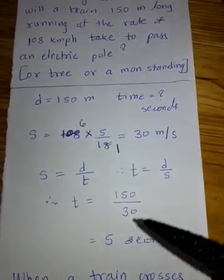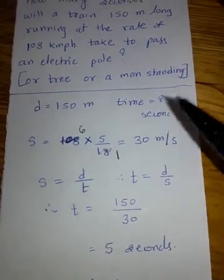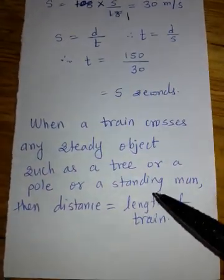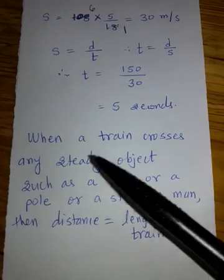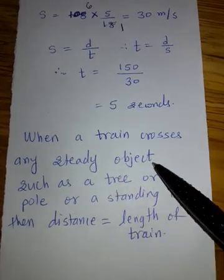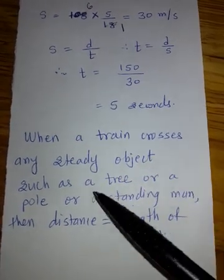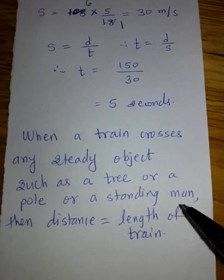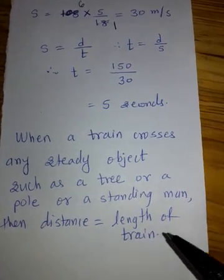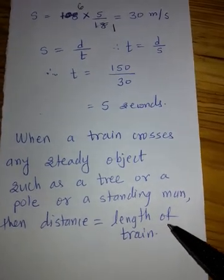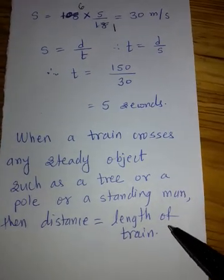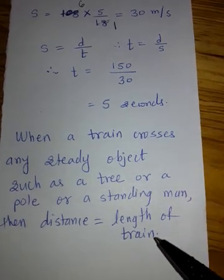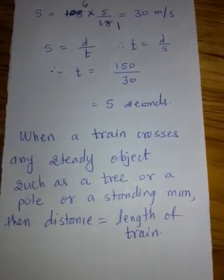This is again one overall problem. Here you just need to understand this principle: when a train crosses any steady object such as a tree, a pole, or a standing man, then the distance covered by it is equal to the length of the train.